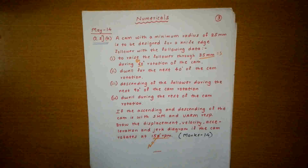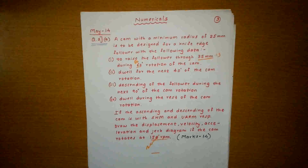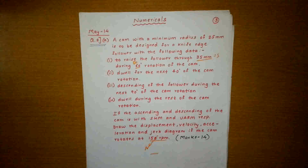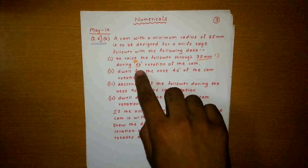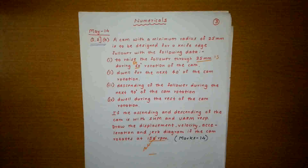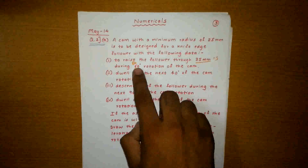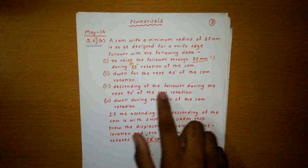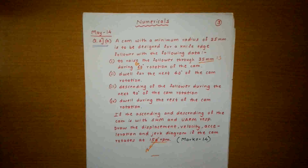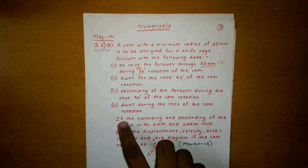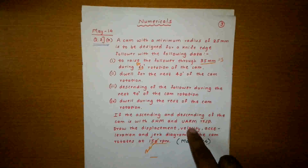Now let's solve one numerical from the question asked in May 2014 on cam mechanisms. The question: a cam with a minimum radius of 25 mm is to be designed for a knife-edge follower with the following data. Raise the follower through 35 mm (displacement s) during 60° rotation of cam (theta0, the out-stroke angle). Dwell for next 40° (dwell angle). Descend the follower during the next 90° (return angle). Dwell during the rest. The ascending is SHM and descending is URM.